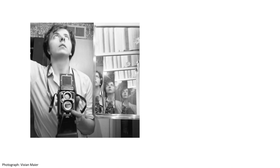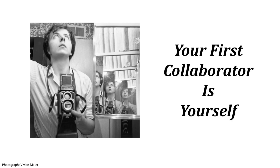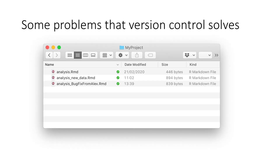The best way to start thinking about version control is to understand that your first collaborator is yourself. If you've been doing collaborative data analysis for any length of time, you've probably run into this problem: multiple versions of your code, perhaps one living on your laptop or one in your cluster, or maybe even a code change that one of your collaborators has sent you.